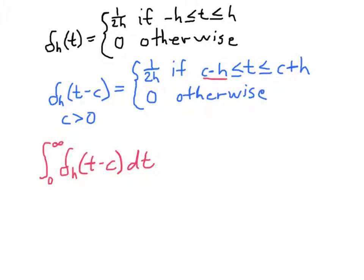And if that's the case, then because this function is zero everywhere except between c minus h and c plus h, what we really have is the integral from c minus h to c plus h.